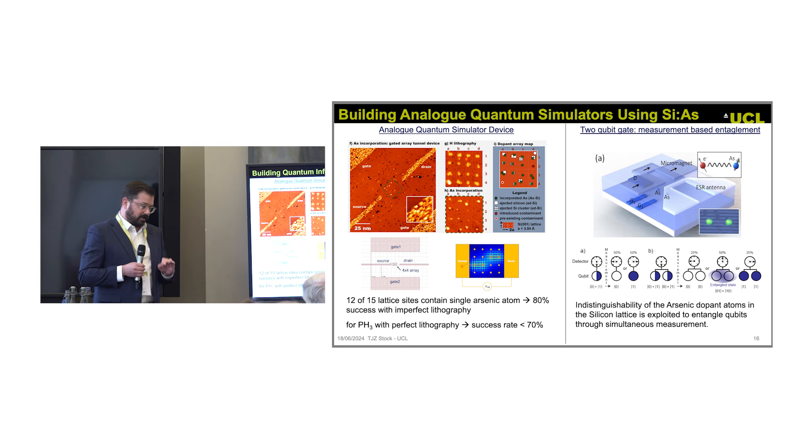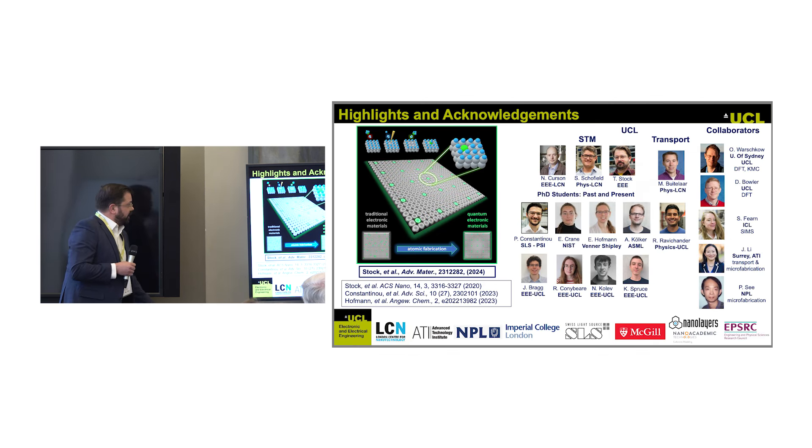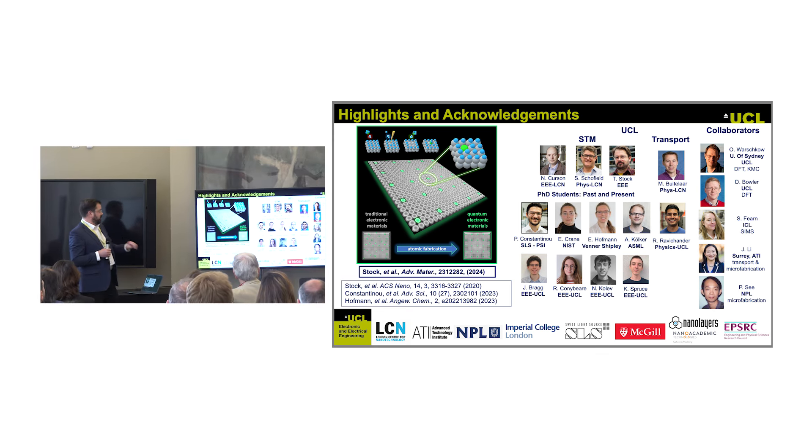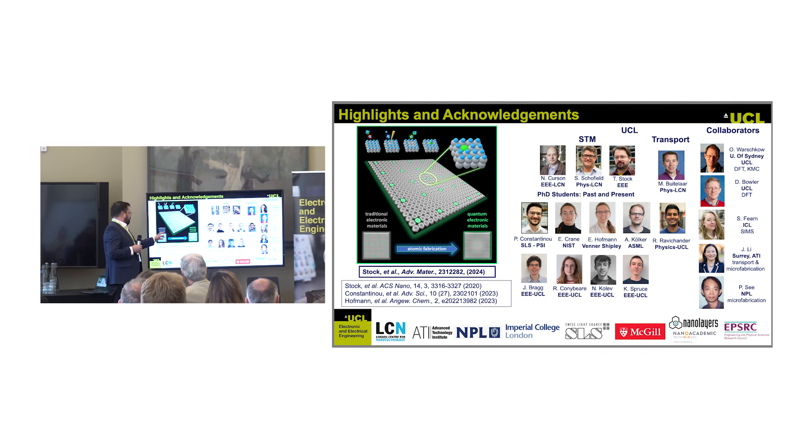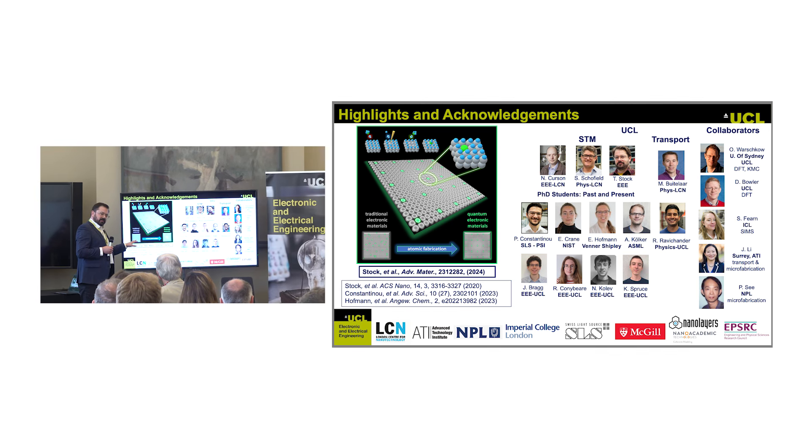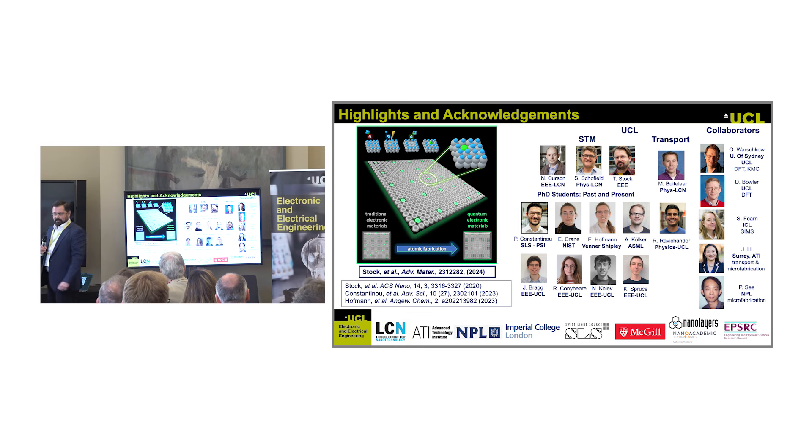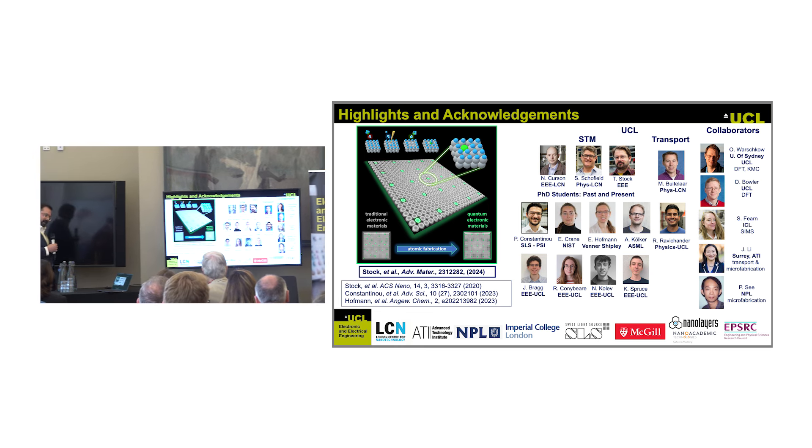Because we can put individual atoms wherever we want them, and they're indistinguishable, we have a scheme to do entangling using measurement-based entanglement, which relies on the indistinguishability of these qubits when you measure them. Here's everybody that was involved. Upshot is we can do single atom fabrication. Instead of traditional electronic materials where you have disorder at the atomic scale, we can make perfectly ordered arrays in silicon using dopants. Thanks.